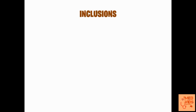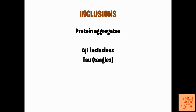These protein aggregates are called inclusions. Examples of inclusions include beta-amyloid inclusions, which are called plaques; tau, which are called tangles; and alpha-synuclein inclusions. There are some more inclusions specific to various neurodegenerative diseases. When we talk about individual neurodegenerative diseases in detail, you will come to know which inclusion is present in which disease.